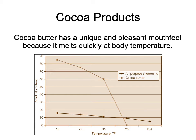Cocoa butter has six different types of fat crystals. It's unique in that it has a pleasant mouthfeel because it melts quickly at body temperature. By the time cocoa butter reaches 95°F there are no solids left — and since your body is above 95°F, it becomes fully liquid just from body heat. Compare that to all-purpose shortening, which is still quite solid at 95°F and feels waxy and gummy in the mouth. Chocolate is very popular partly because of this pleasant melting quality.